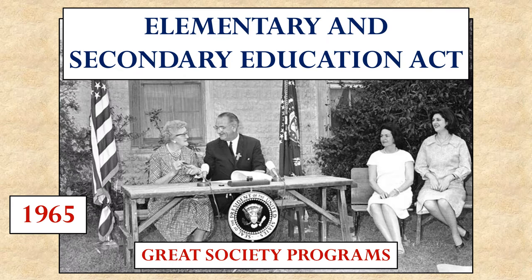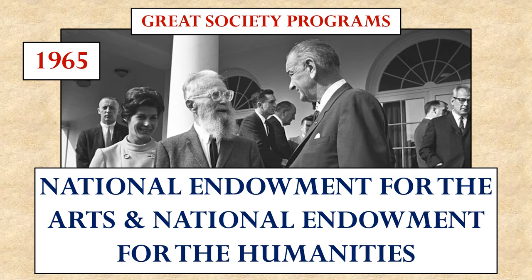Another Great Society program was the Elementary and Secondary Education Act, which provided federal funding for schools throughout the country. This money was contingent on those schools abiding by various federal rules and regulations — in effect bringing the national government into control of the educational system that had previously just been administered by the states. Another pair of Great Society programs established the National Endowment for the Arts and the National Endowment for the Humanities, providing funding for teaching humanities, art, and history in school, while also funding artists to produce paintings and plays. This was part of Johnson's vision of using the government to enrich society — not just to help the poor, but to give everyone a better quality of life.